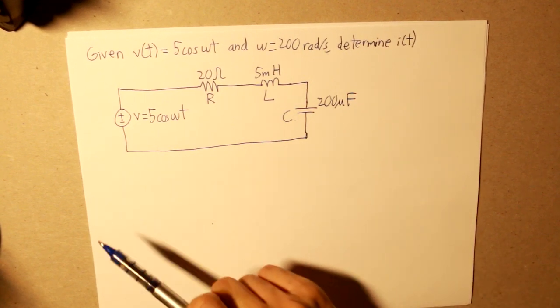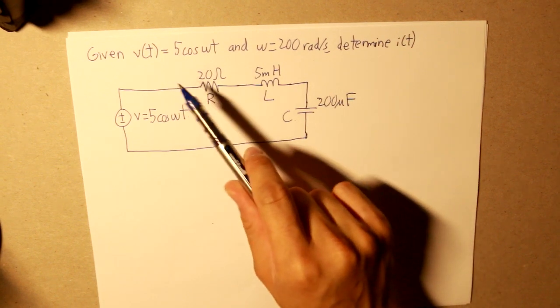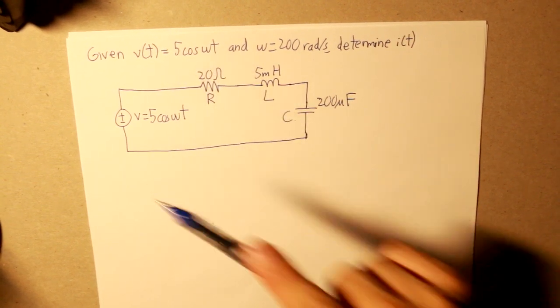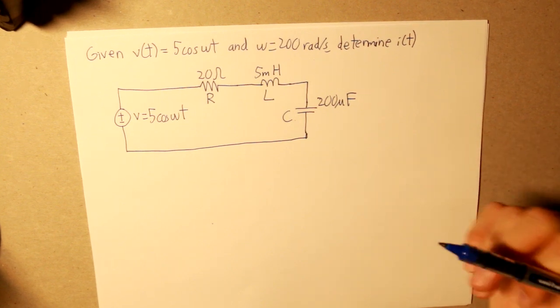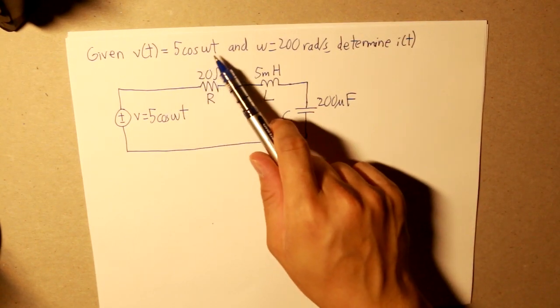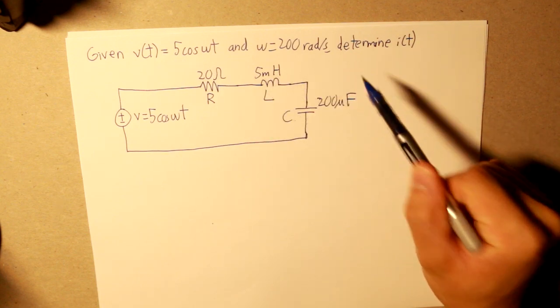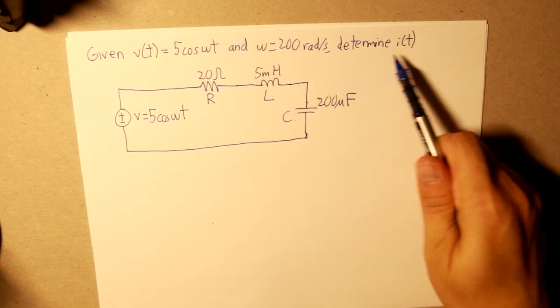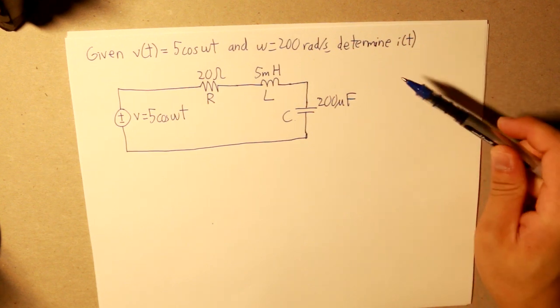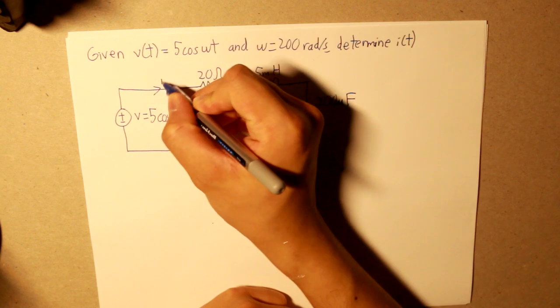So here, the question is, given the voltage source, the amplitude is 5, and we have it being an AC wave, and that's why we have this cosine here, cosine angular frequency times time. And given that the angular frequency is 200 radians per second, try to determine the instantaneous current.